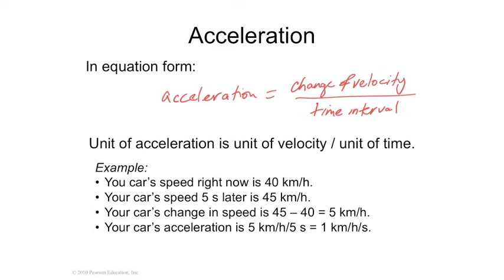Your speed is 40 kilometers per hour. So if you go up to 45, you take the final minus the initial. So 45 minus 40 gives you five kilometers per hour. That's your change in velocity. However long it took you to do that, it was five kilometers per hour.